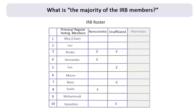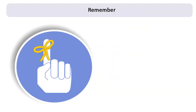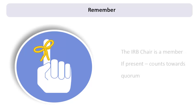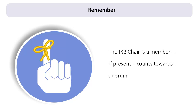If an IRB has a total of 10 primary members on its roster, more than half must be present to establish quorum, so at least 6 members are required. Remember, the regulations also require that at least one of the members in attendance be a non-scientist. Note that the IRB chair is a member and, if present, counts towards quorum.